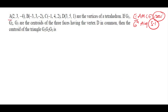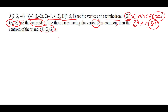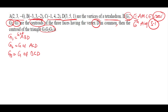Next question: vertices of a tetrahedron are A(2, 3, -4), B(-3, 3, -2), C(-1, 4, 2), and D(3, 5, 1). If G1, G2, G3 are the centroids of the three faces having vertex D in common, then find the centroid of triangle G1G2G3. G1 is the centroid of triangle ABD, G2 is the centroid of triangle ACD (D is common), and G3 is the centroid of triangle BCD.